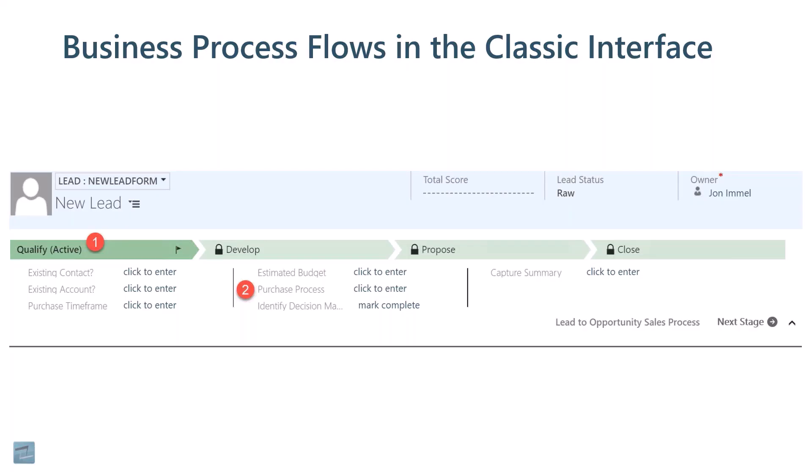As you'll see, this may be familiar to many of you if you are currently using CRM in the classic interface. Marker number one shows you the different stages in the business process flow, and two shows you what's called the fly down, which shows the different steps in the business process flow. One thing in the classic interface that is a little bit confusing is in these fly outs — they go along horizontally below the step. The problem is all seven of these steps are a part of the qualify stage.